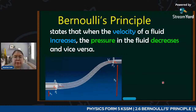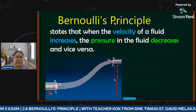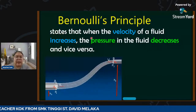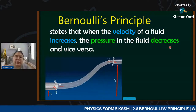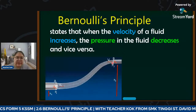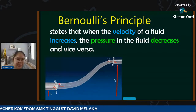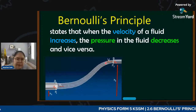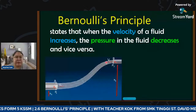Continuing with the Bernoulli Principle - this is the definition. Remember the spelling: double L, then apostrophe S. Bernoulli states that when the velocity of a fluid increases, the pressure in the fluid decreases, or vice versa. When it flows through a narrow tube, the speed is high and creates low pressure.